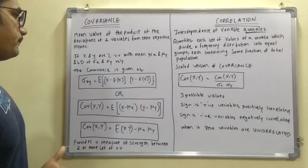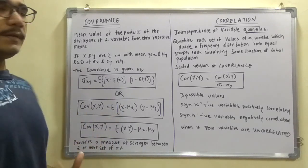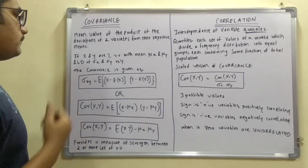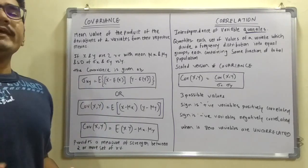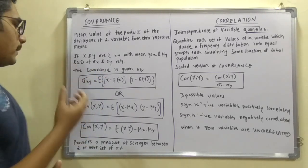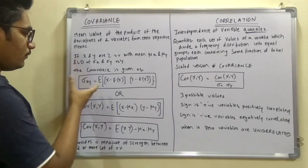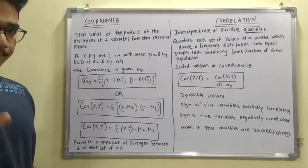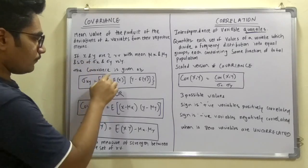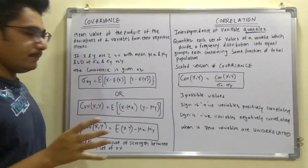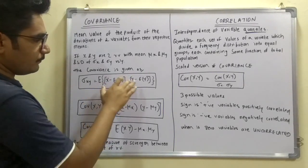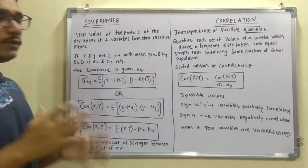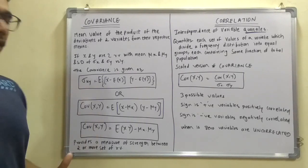If X and Y are two random variables with means mu_X and mu_Y, and standard deviations sigma_X and sigma_Y respectively, then the covariance is defined as sigma_XY. Here E stands for the expected value (mean), and covariance is the expected deviation of X from its mean multiplied by the deviation of Y from its expected mean.